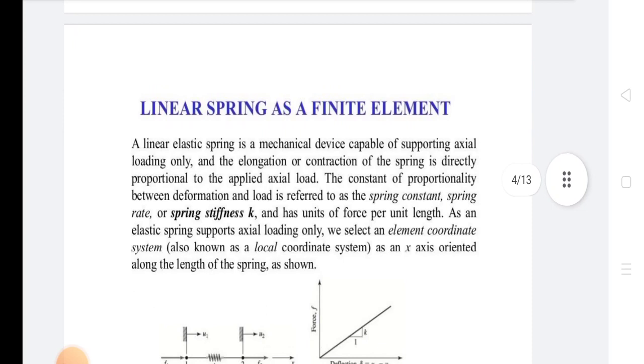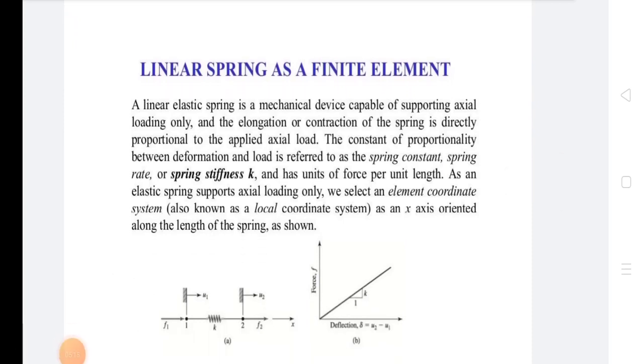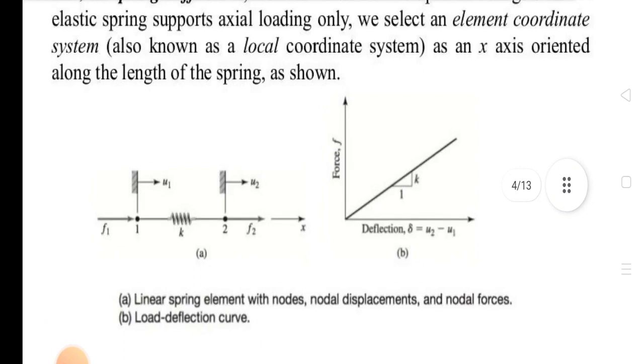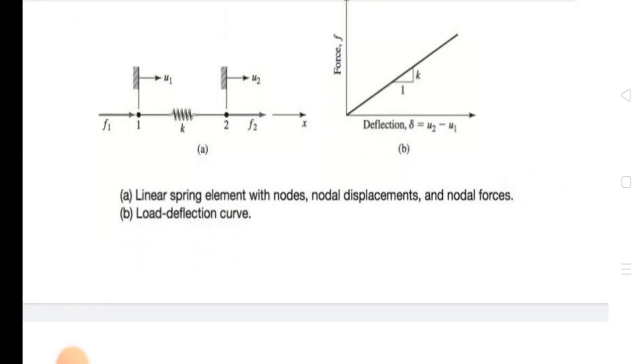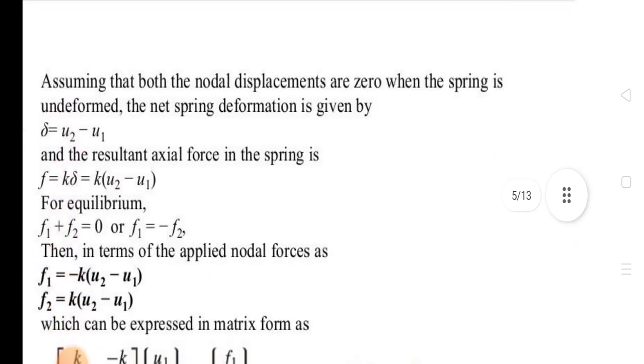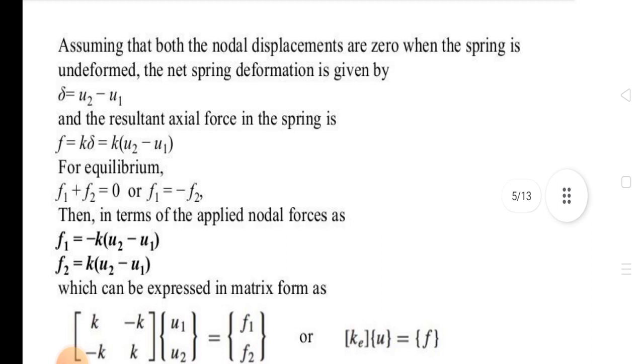A linear spring as a finite element: A linear elastic spring is a mechanical device capable of supporting axial loading and the elongation and contraction of the spring is directly proportional. This shows a spring with spring stiffness K, displacement U1 and U2, forces F1 and F2. This is a linear spring element with nodal displacement and nodal forces. And this is the load deflection curve. Assuming that both nodal displacements are zero when the spring is undeformed, the net spring deformation is given by delta equals U2 minus U1. F equals K times delta, that is K times (U2 minus U1).